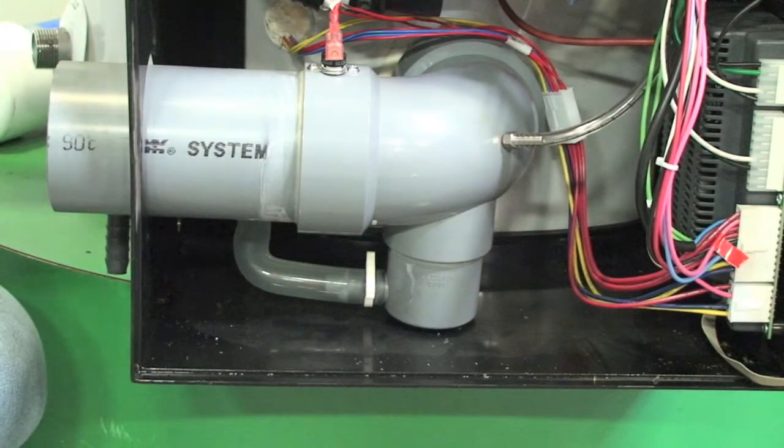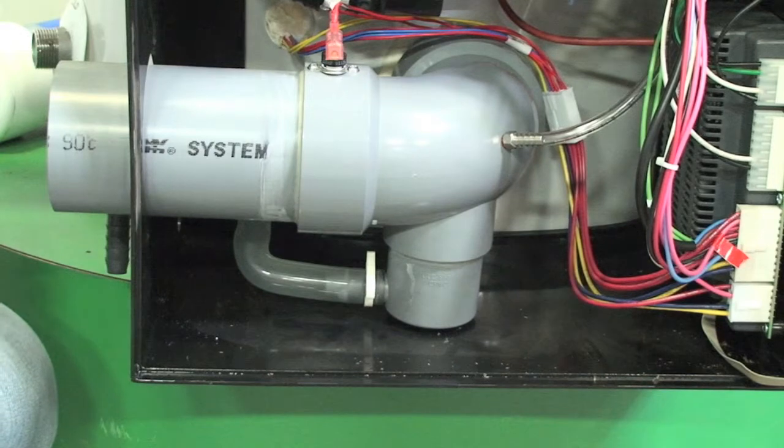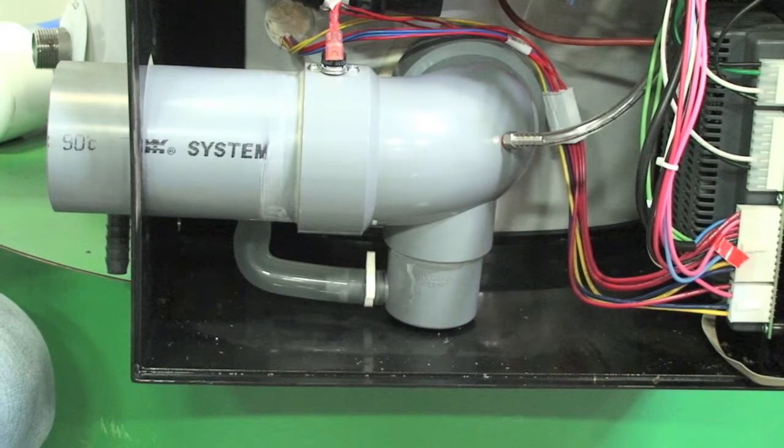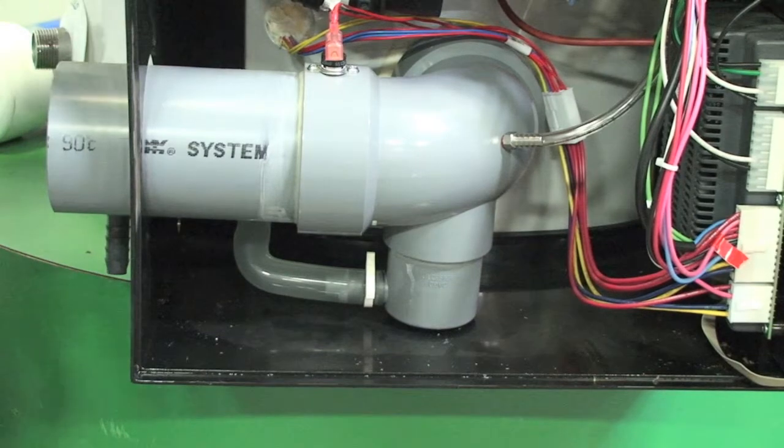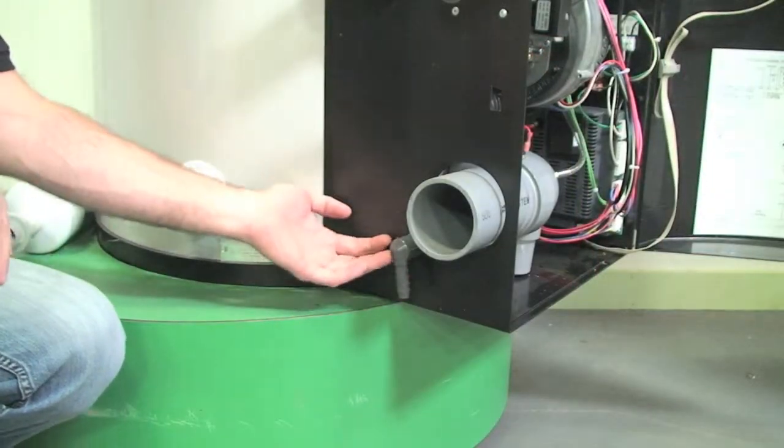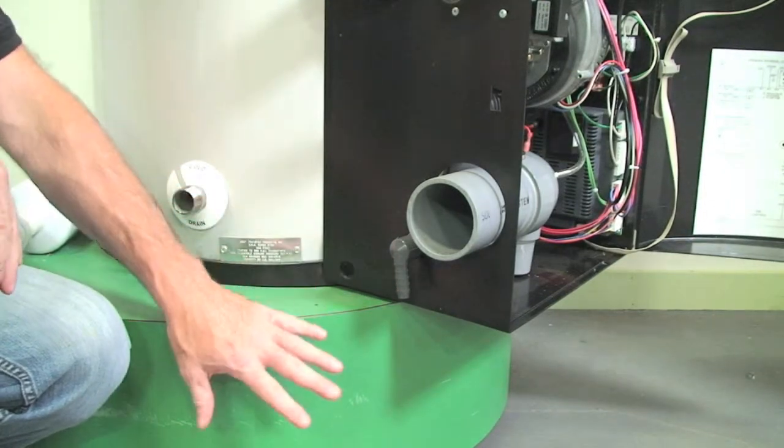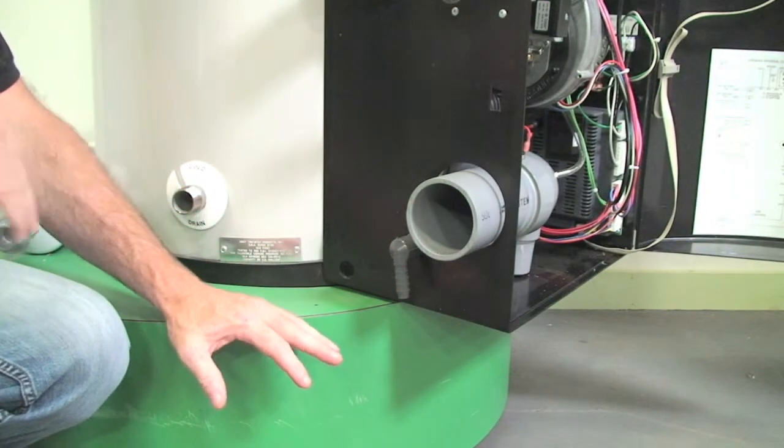As we talked about, condensate from the combustion process is very acidic, and in some cases we may need to add a condensate neutralizer, which we will show you now. Here is the outlet to our condensate drain. Of course it is lower than the trap itself. It needs to drain either into a floor drain or perhaps into a pump if we need to pump it out.